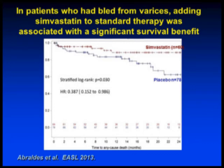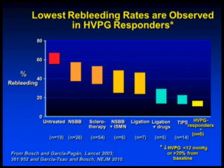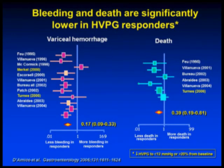We are anxiously awaiting publication of that paper. TIPS has the lowest re-bleeding rates but has side effects, so it is second-line for those who fail. The patients with the least re-bleeding are HVPG responders — those who decrease their HVPG to less than 12 mmHg (normal 3–5) or more than 20% from baseline. These responders not only bleed less but also die less. By treating portal hypertension we are not only treating varices but treating the liver in general, and this should reorient our endpoints in the treatment of variceal hemorrhage.